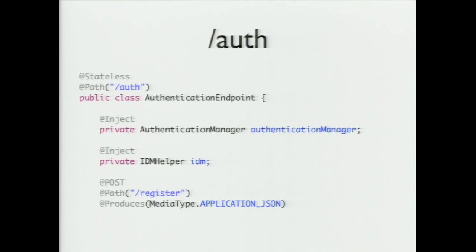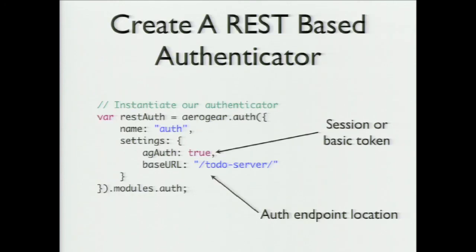Here's an example of the authentication endpoint. We're injecting a few PicketLink items. More important is how we set up the client connection to that endpoint. This is JavaScript — here we're asking the AeroGear JavaScript library to create an authenticator; in this case we call it 'restAuth' and give it a name. We can choose whether or not it's session or token based. That flips the bit on what Marius was talking about — whether you have session-based authentication or simple token-based. Then you tell it where the auth endpoint lives.